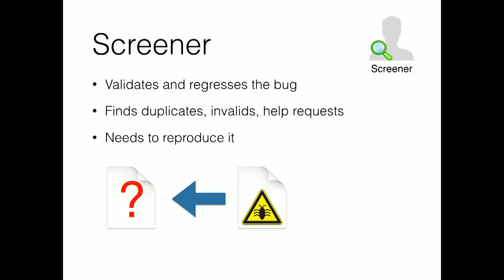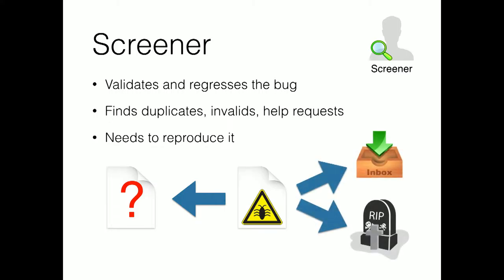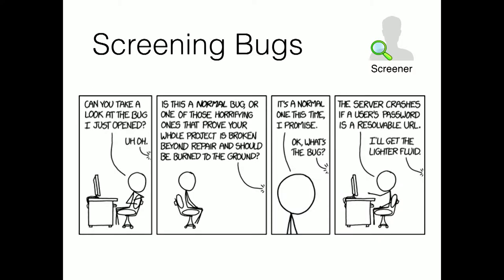So a screener gets a bug dropped on them and figures out: do I have everything I need to try to reproduce it, or am I going to go back to the reporter and ask more questions? Once they're satisfied they have everything they need, it either drops into the inbox for the next person or they kill it right there. For the screener, you're trying to get it into the inbox of the next person. Coincidentally, XKCD's comic for today is all about bugs.